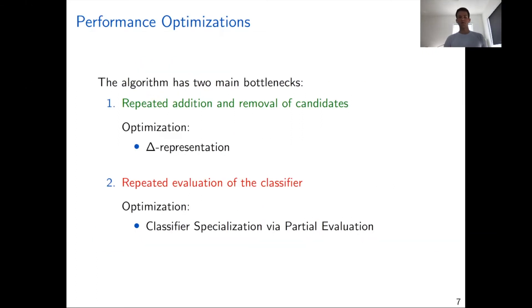There are two main bottlenecks for this algorithm. First, we repeatedly add and remove candidates from the underlying population, and so we continuously update this dataset. In order to mitigate this bottleneck, we present a novel representation for the candidate population, which we call the delta representation, which is essentially a compressed representation of a normal listing representation of the candidate counterfactuals. This makes this addition and removal of these candidates much more efficient.